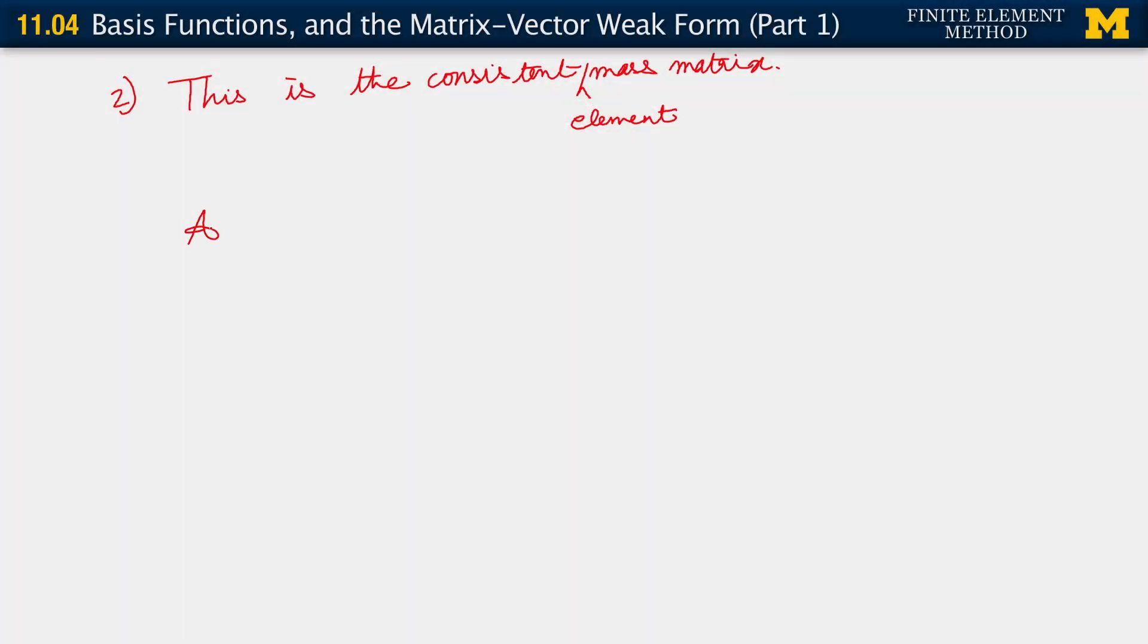So a lumped element mass matrix is the following, right? M_e tilde, okay? Which is obtained as follows. On each diagonal, you sum over b, m_1b^e. Okay?